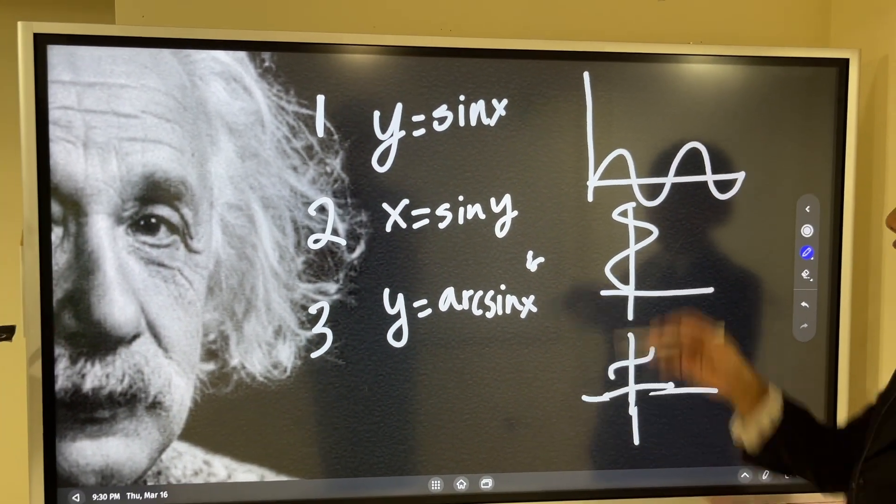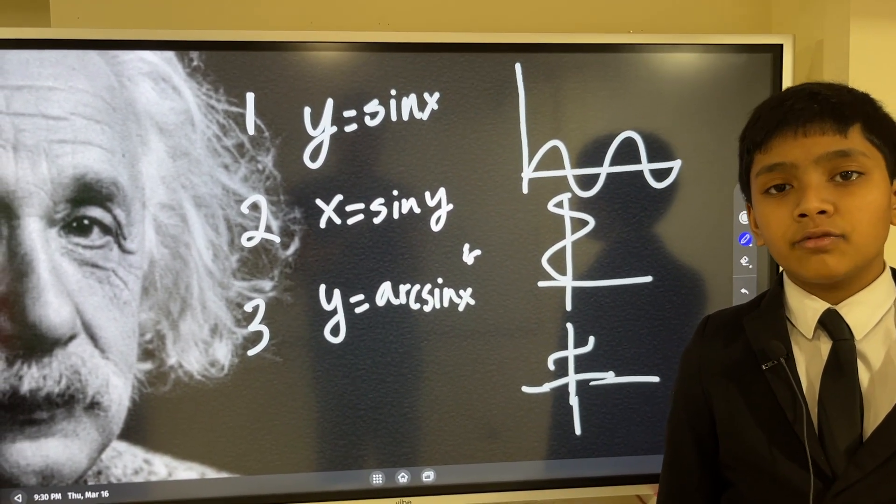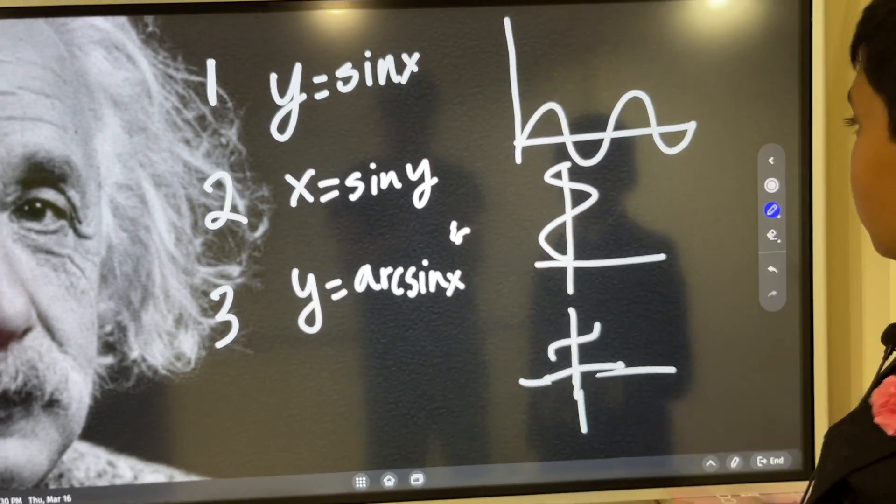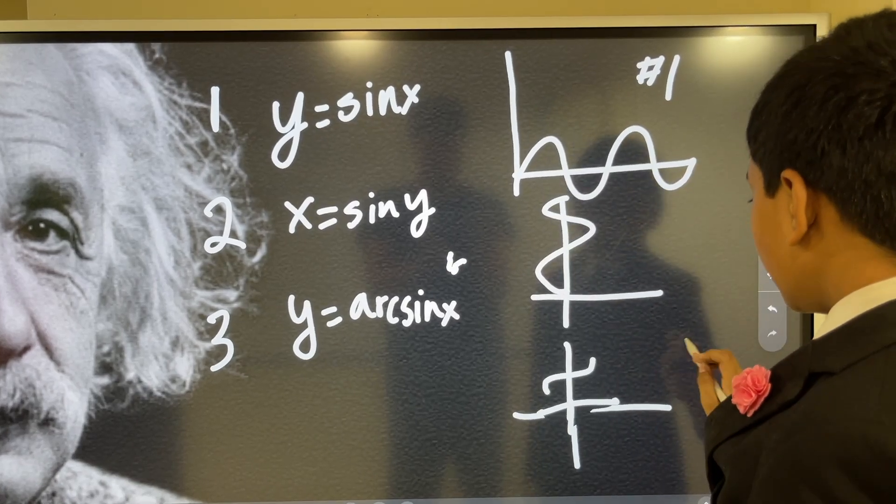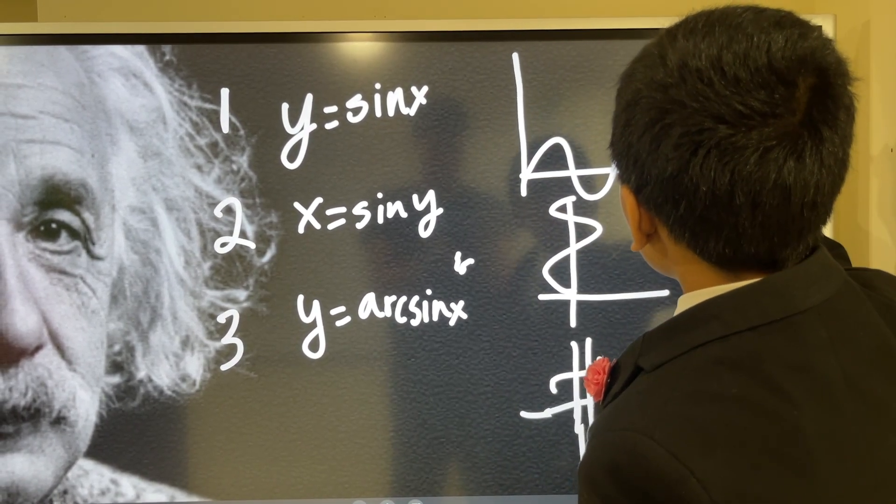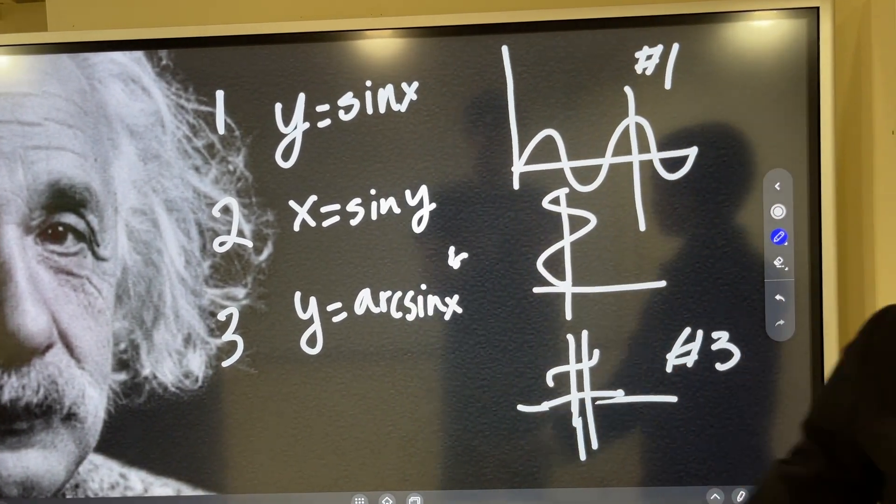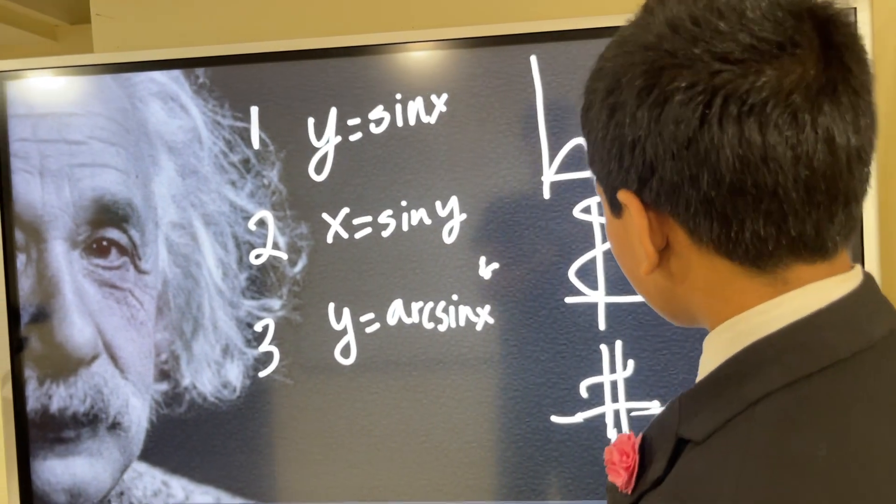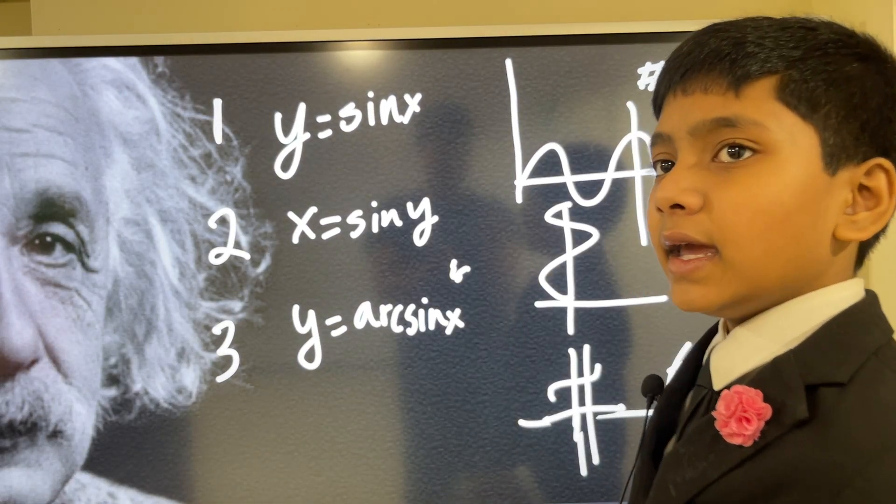So, how many of these three are functions? Let's see if you can identify it. Well, the answer is, number one is a function, and number three is a function. Because, if you draw lines, vertical lines anywhere on them, you'll find out that for any one input, there was only one output. But, for x equals sine y, that's not the case.